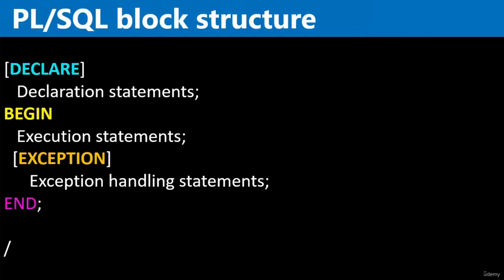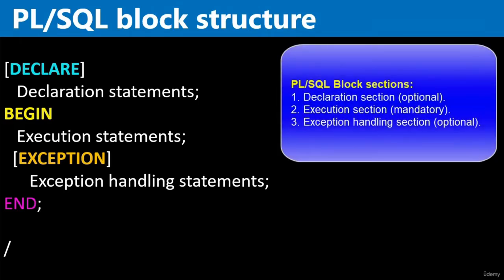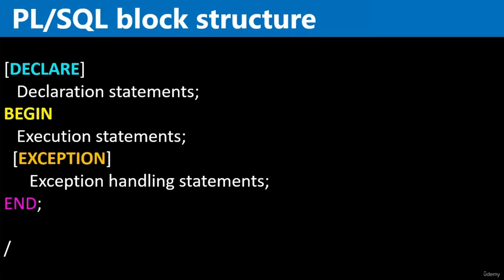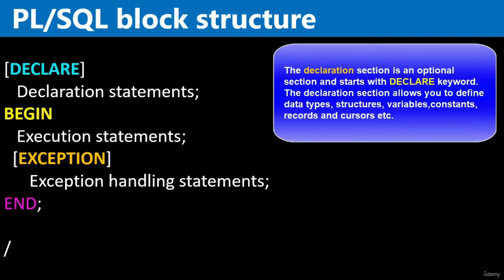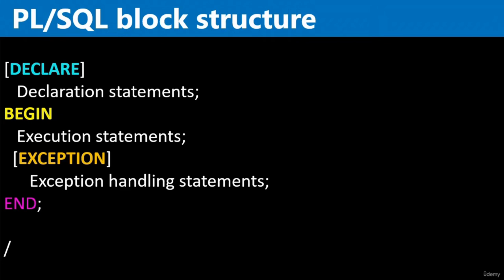A typical anonymous block has three basic sections. First, the Declaration section — this is optional and allows you to define data types, structures, and variables, including variable names, data types, and initial values. Second, the Execution section — this is mandatory and starts with BEGIN and ends with END. This is where you write the logic for your program.